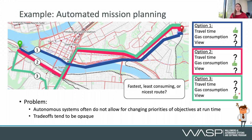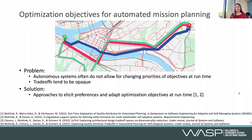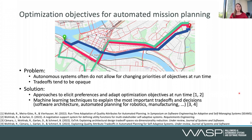To address these issues, I've developed techniques on one hand to elicit preferences and adapt optimization objectives at runtime, and on the other hand, since trade-offs are opaque, to explain the most important trade-offs and decisions using machine learning techniques. I've applied them to software architecture, automated planning for robotics and manufacturing. Today we can dive into the topic of automated planning for robotics, and I can show you how these machine learning techniques work in that context to explain trade-offs.